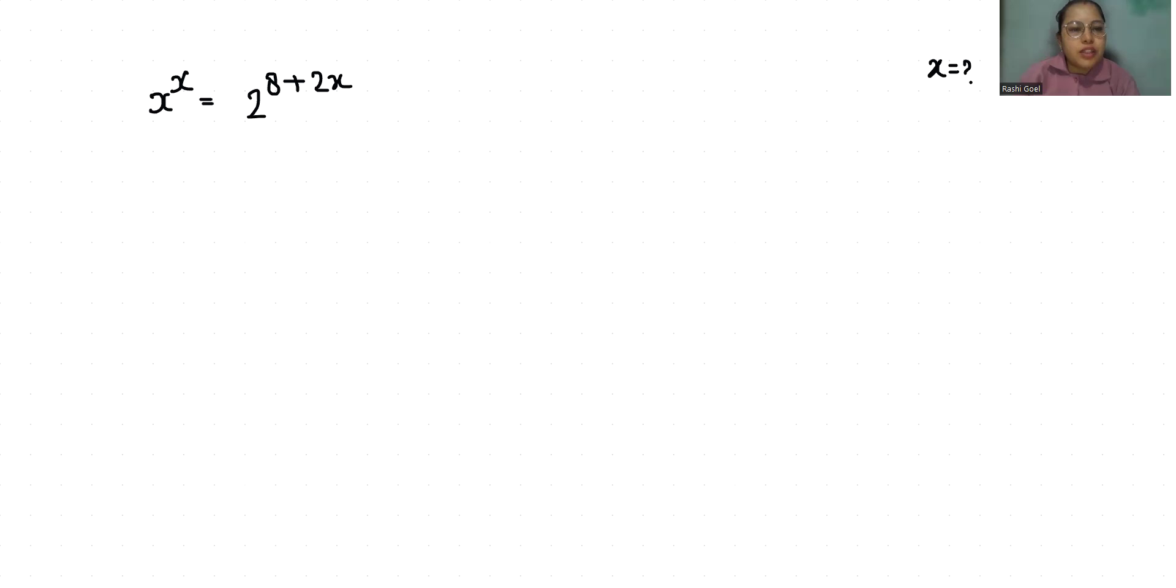So let's start with today's video solution. x power x equals, according to exponent rule x power m plus n, we can write it as x power m times x power n. So 2 power 8 times 2 power 2x.